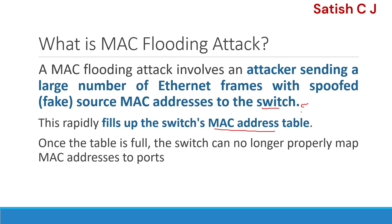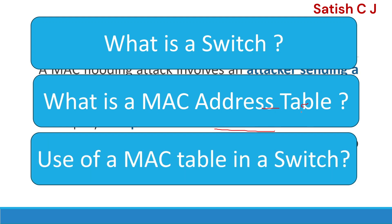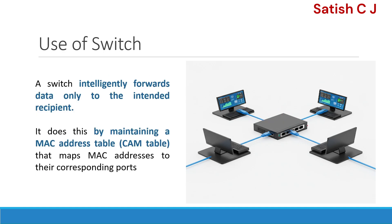To understand this attack, we need to understand what a network switch is and what the MAC address table inside the switch is. A network switch is a hardware device with ports where machines connect via Ethernet cables. It is used for creating a network infrastructure that enables devices to communicate with each other.